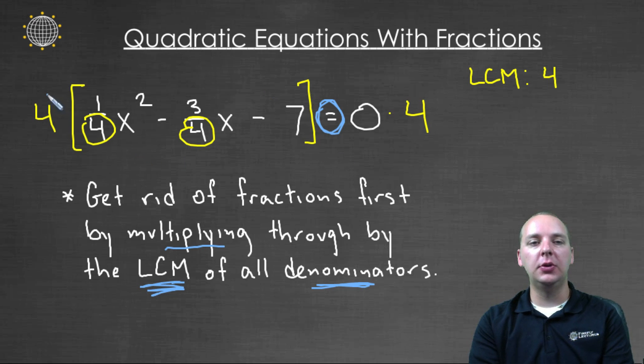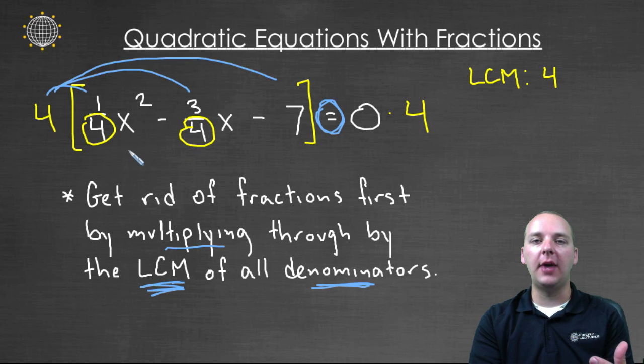And what that's going to do is when you distribute this through, because four is a multiple of these denominators, these little mini-denominators will cancel away, and then you'll have a new equation that won't have fractions, and it'll be a lot easier to solve.